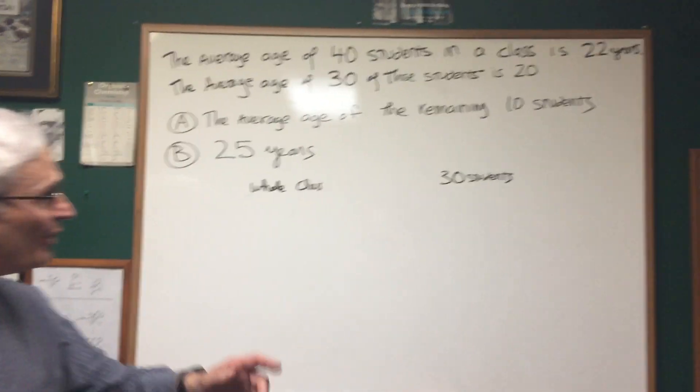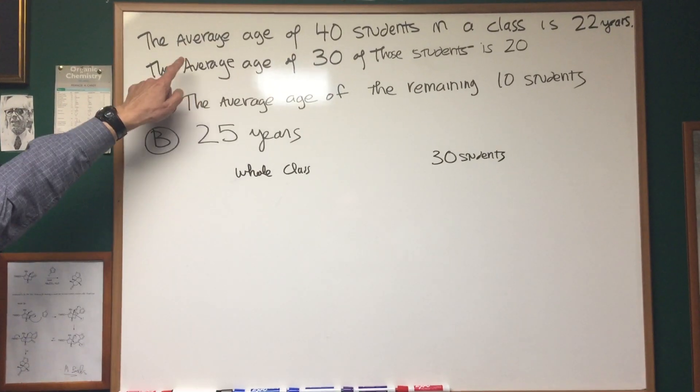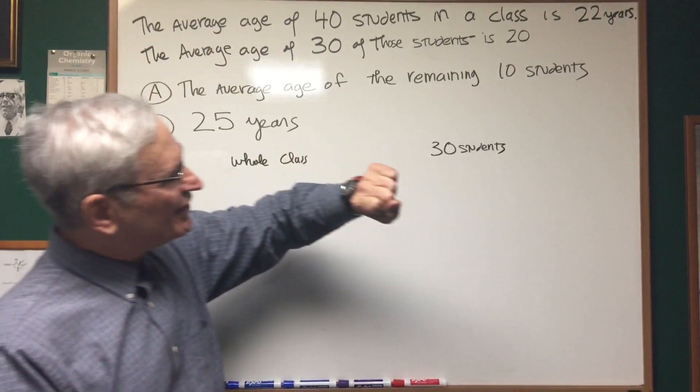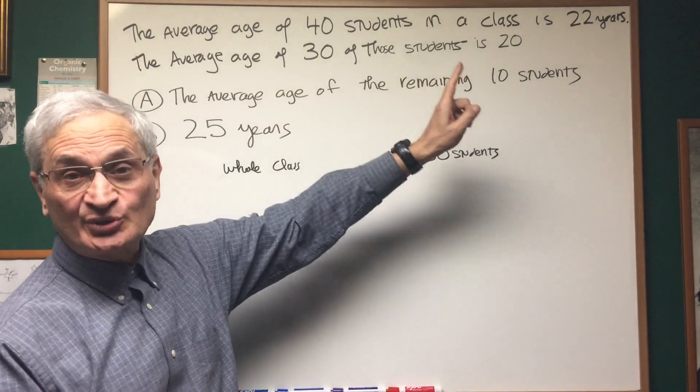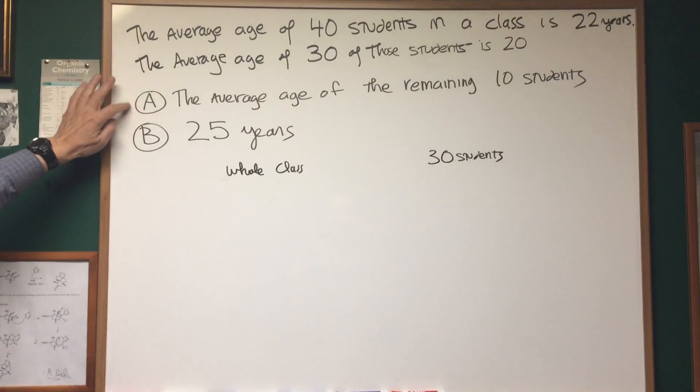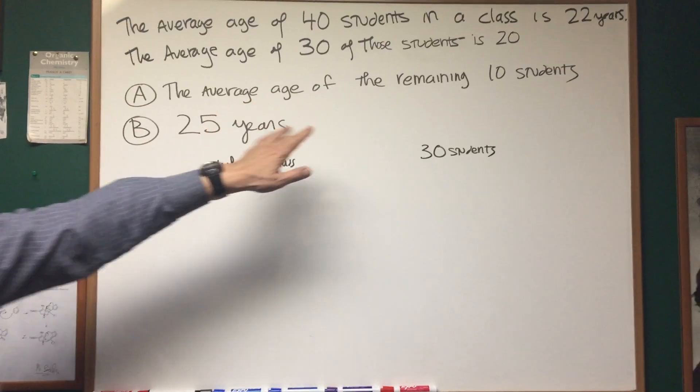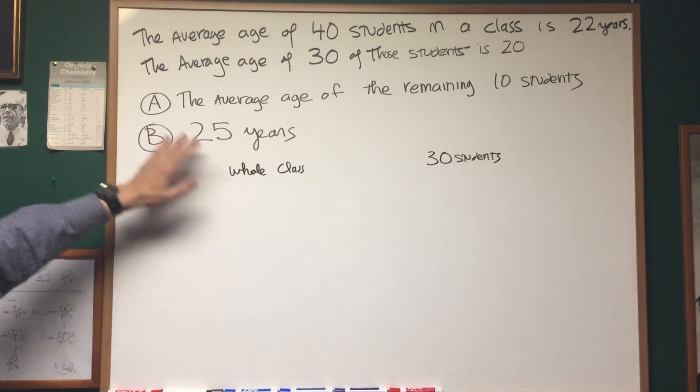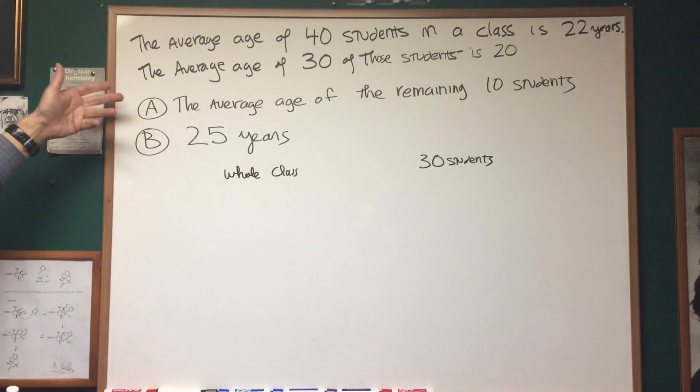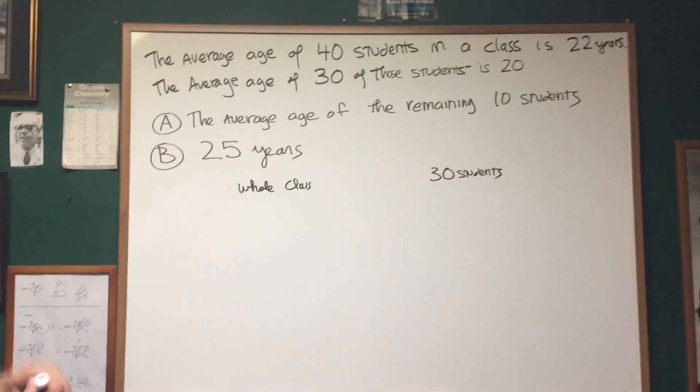Okay, Professor Blois here. Let's read the problem together. The average age of 40 students in the class is 22 years. The average age of 30 of those students is 20. Quantity A is the average age of the remaining 10 students. Quantity B is 25 years. It's a comparison problem. Which quantity is greater? Can it be determined?